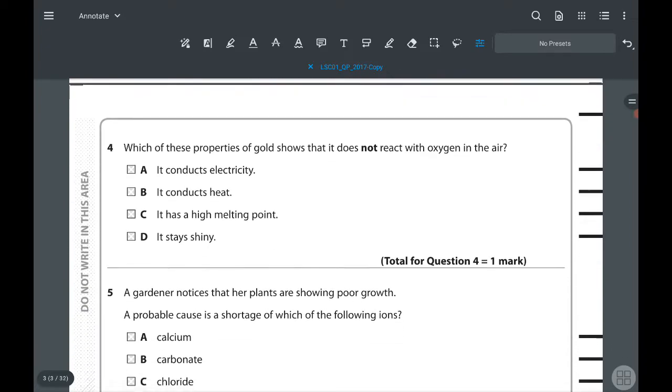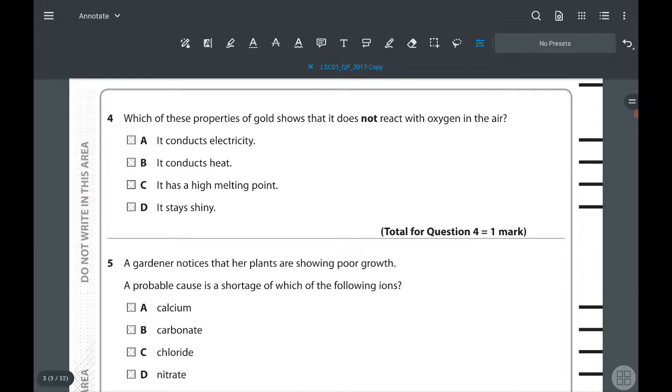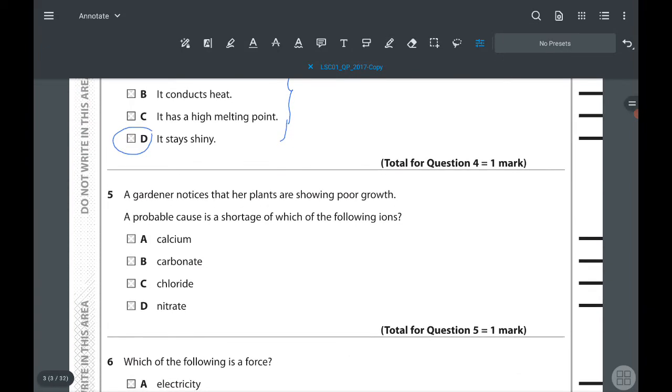Fourth question: which of these properties of gold shows that it does not react with oxygen in the air? Gold is inactive. It conducts electricity and heat - those are properties of metal. It has a high melting point. It stays shiny. If it stays shiny, that means it has not reacted with oxygen. Otherwise, for reactive metals, they are shiny when new or polished, but after a while that shiny appearance goes away because they react with oxygen.